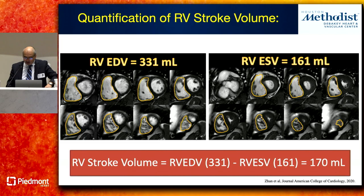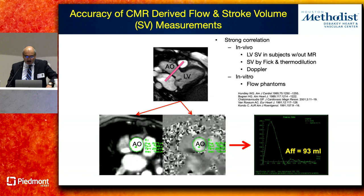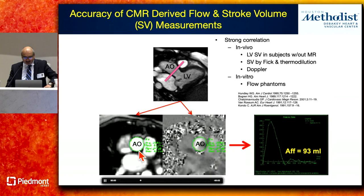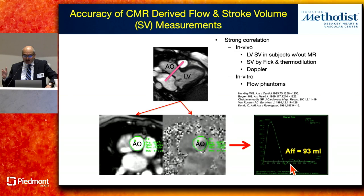Phase contrast CMR is kind of the MRI equivalent of echo Doppler. It's a velocity map — here we've done it in the ascending aorta. By simply drawing a region of interest, we can get a processed flow curve showing what the flow is across the entire cardiac cycle.